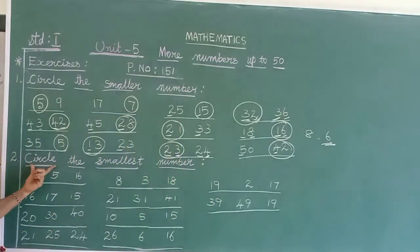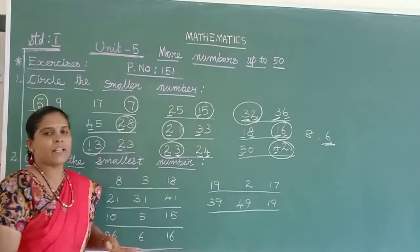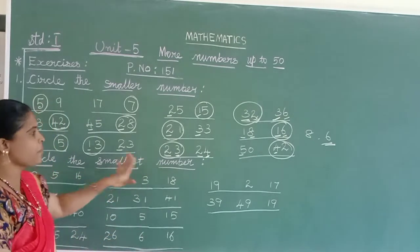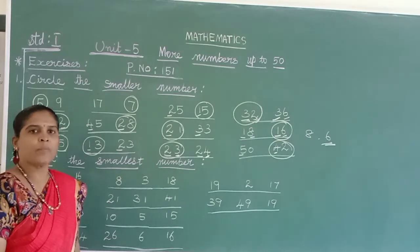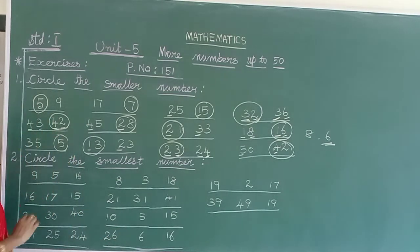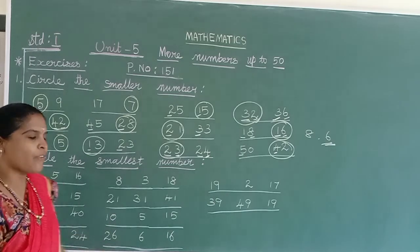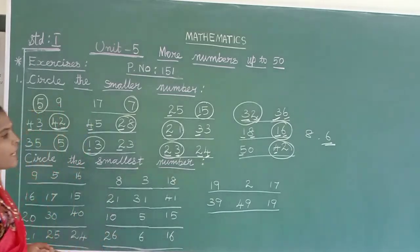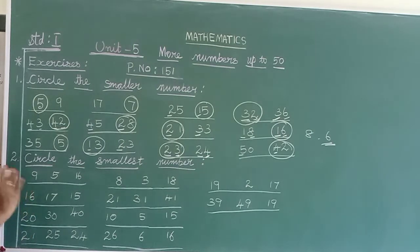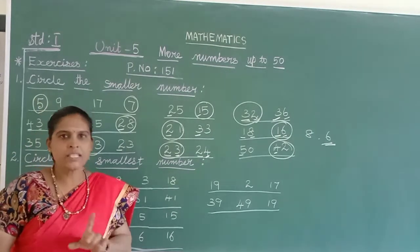Come to the next exercise: circle the smallest number. The same rules are applicable here too. But here they gave more than two numbers — 3, 4, or even 5 numbers. So you compare, read these numbers, and find out the smallest one.